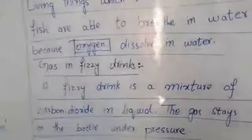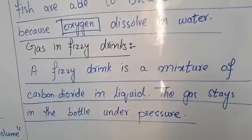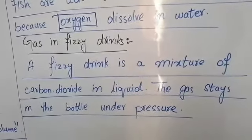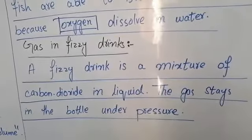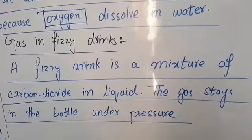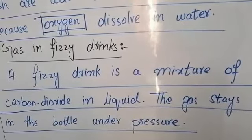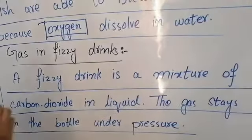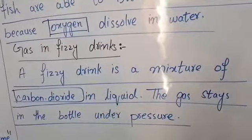There is gas in fizzy drinks. When the bottle is tight and you open it, the gas is released. Fizzy drink is a mixture of gas in liquid. If you take a Coke bottle or 7-up bottle, it is in liquid form. There is gas dissolved in water. Which gas is dissolved? Carbon dioxide. Carbon dioxide is dissolved in liquid.